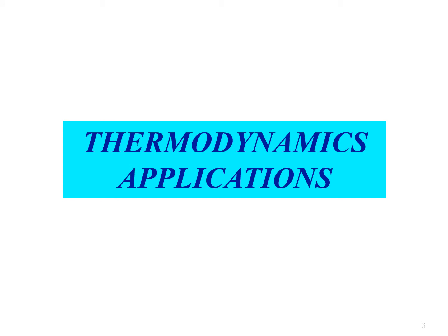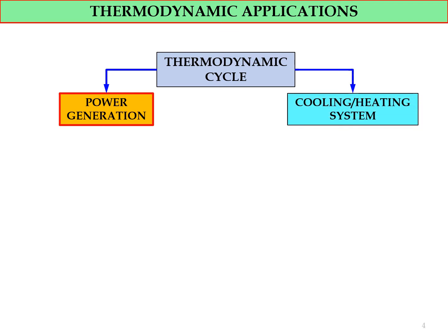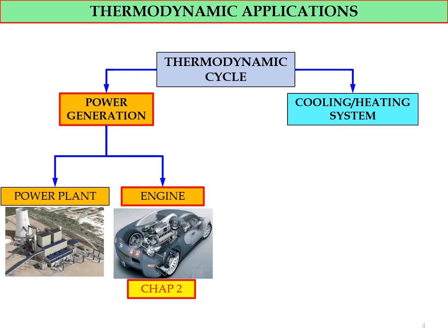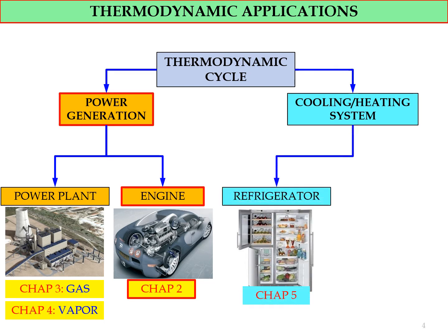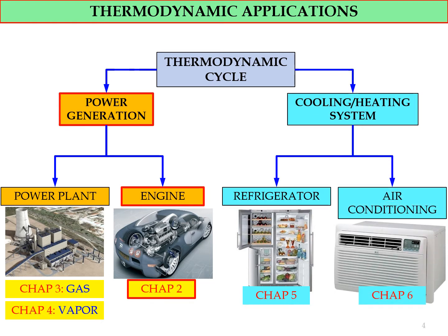In most thermodynamic applications we use thermodynamic cycles to calculate and analyze the system. These cycles fall into power generation and cooling and heating systems. In power generation we have engines, which is the current chapter two, and power plants covered in chapters three and four — gas and vapor respectively. Cooling and heating systems include refrigerators in chapter five and air conditioning in chapter six.